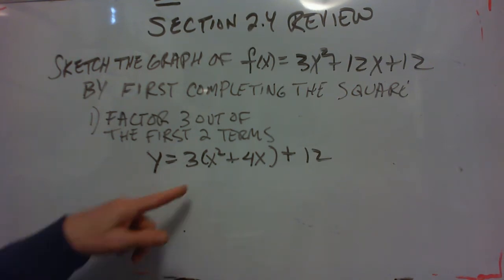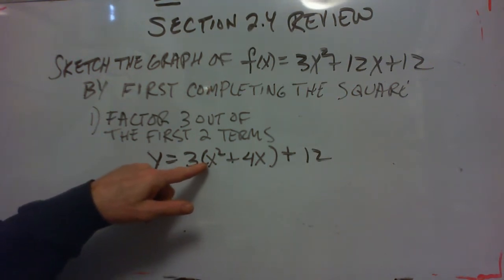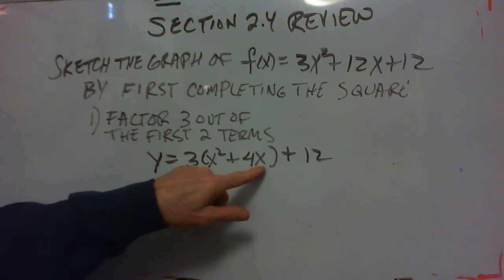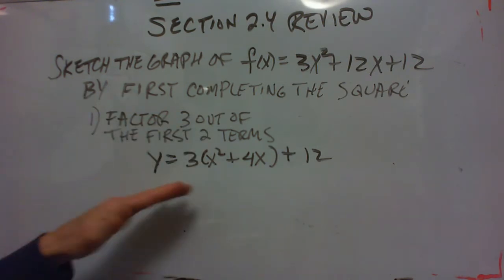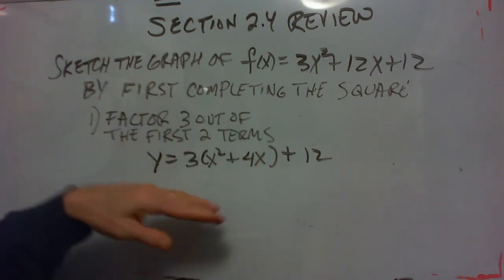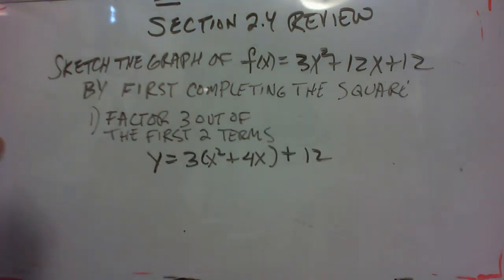So when we factor 3 out, we get 3 times the quantity x squared plus 4x. And as you do this process, you should always be able to multiply out and get your original expression.